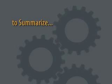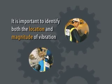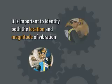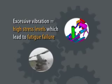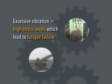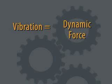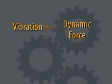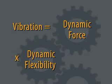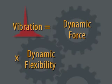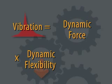Let's summarize this module. To develop the best solutions, Beta's analysts identify the location and magnitude of vibration. Excessive vibration leads to high stress levels on machines and other related components, which leads to fatigue failure. The amount of vibration is determined by two factors: dynamic force, created by the combined motion of a system's moving parts, and dynamic flexibility.